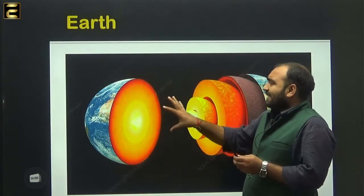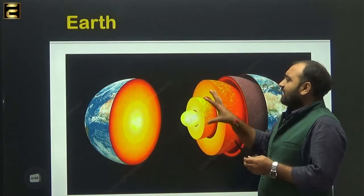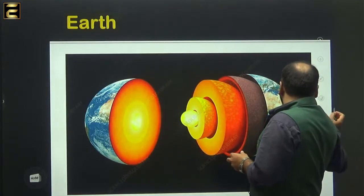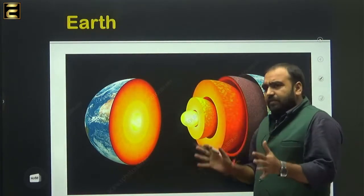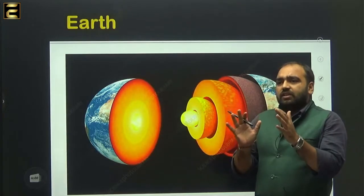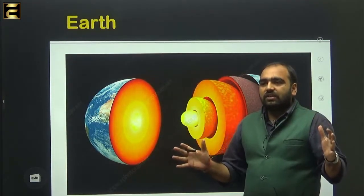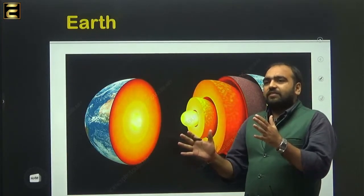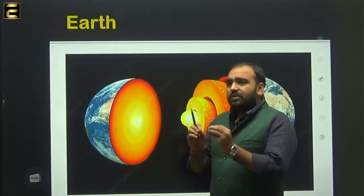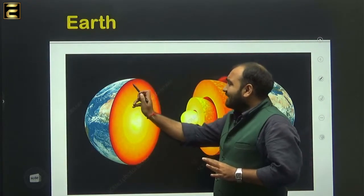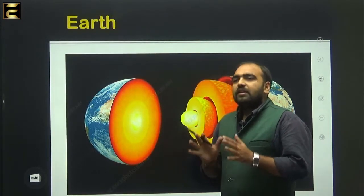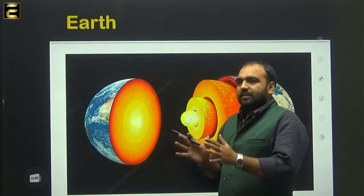From here you can easily observe that the earth is a three-layered structure. From this figure I am telling you how it is a three-layered structure. This is showing the general structure of the earth. Though earth is a three-layered structure, all three layers are again divided into sublayers. You can see the upper part of the earth that we call the lithosphere or crustal part of the earth.